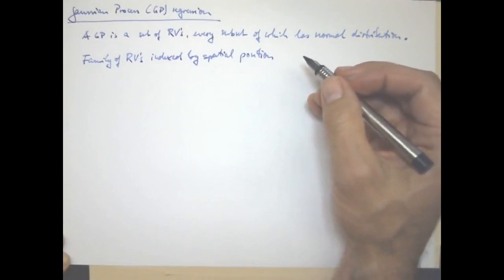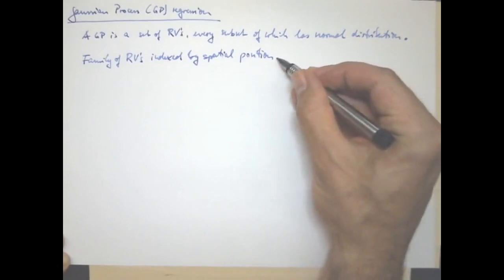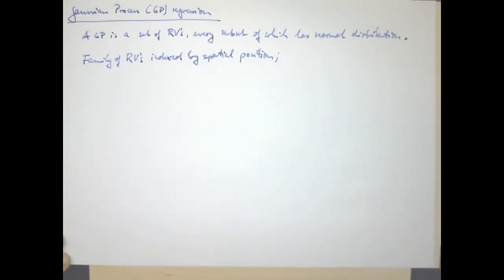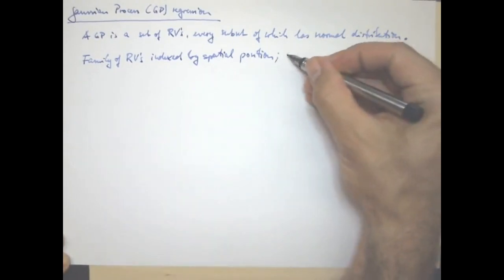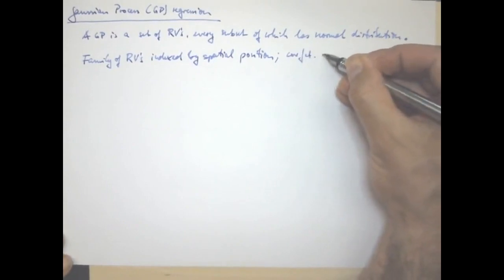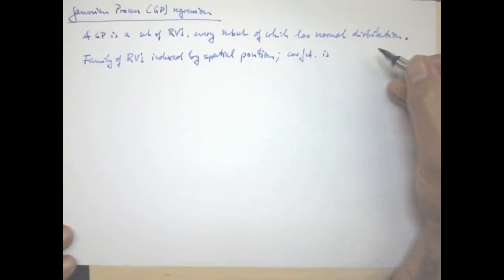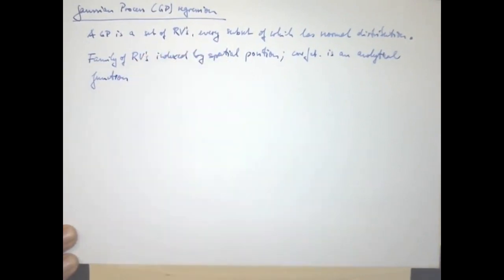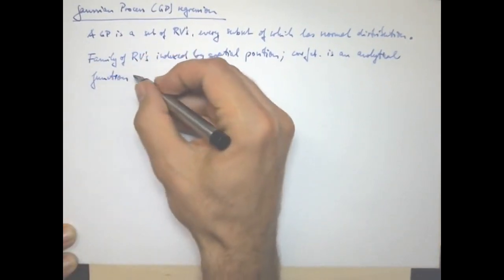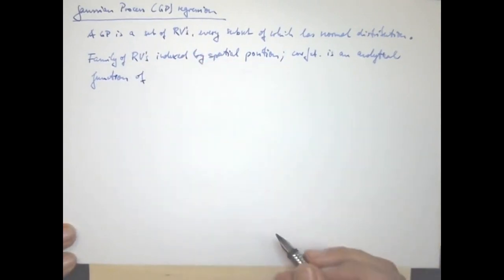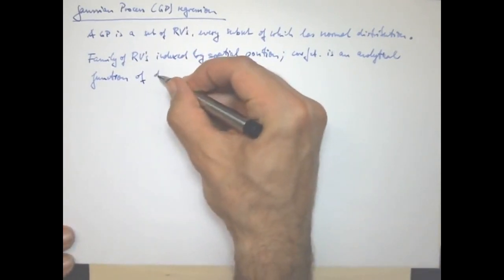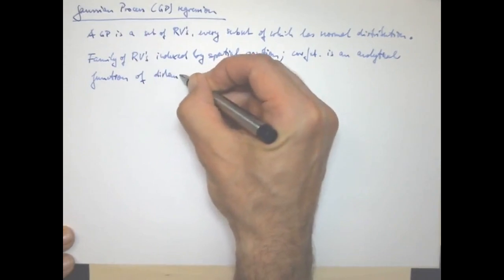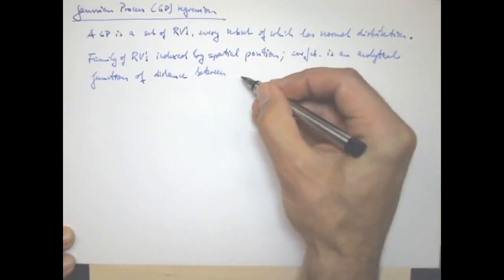And also, we assume that the covariance function is some analytical function, so something that we can easily compute of the distance between any two members of this family.